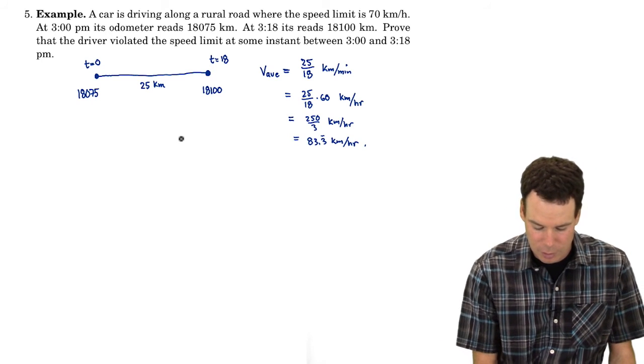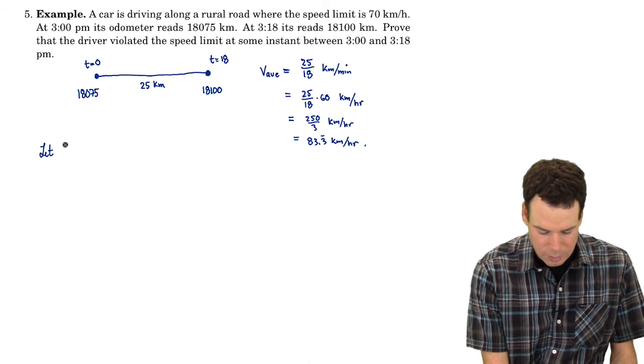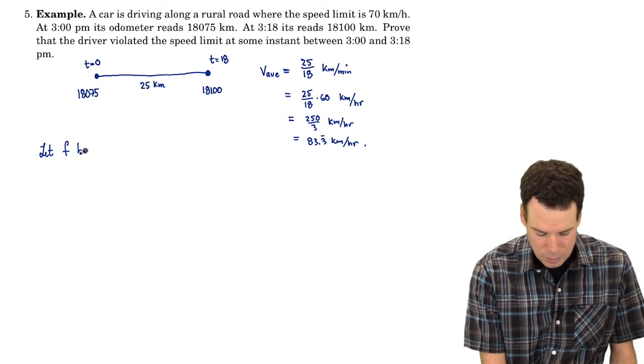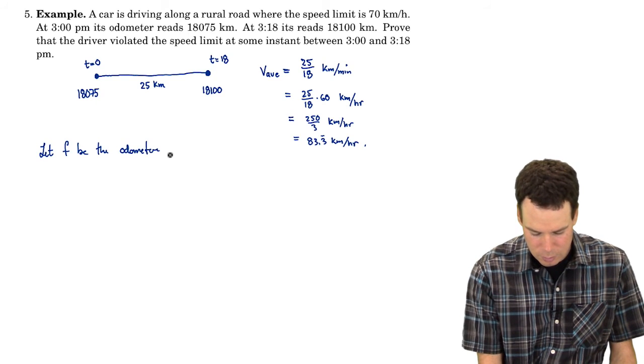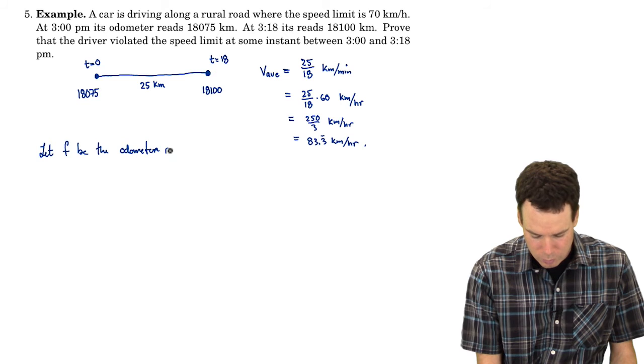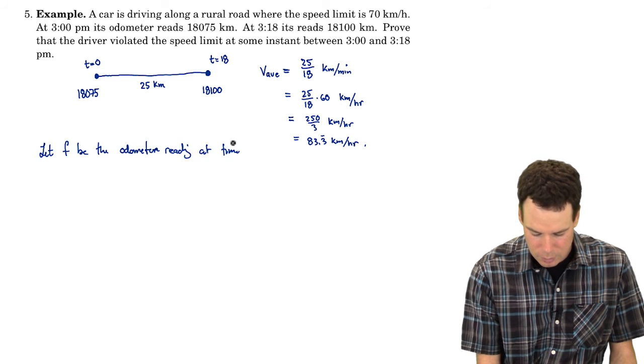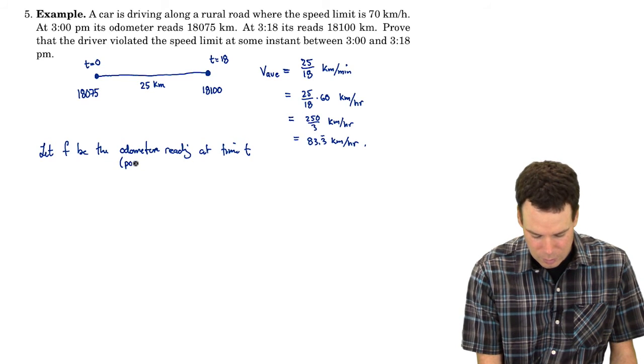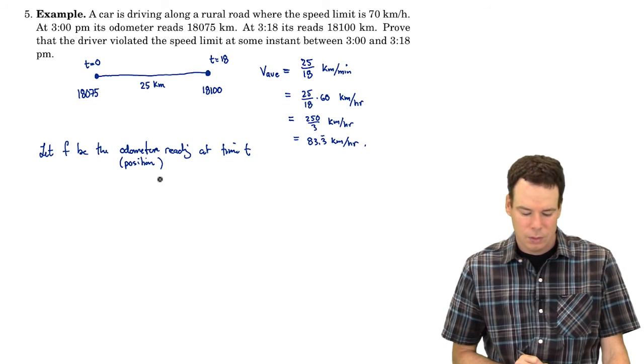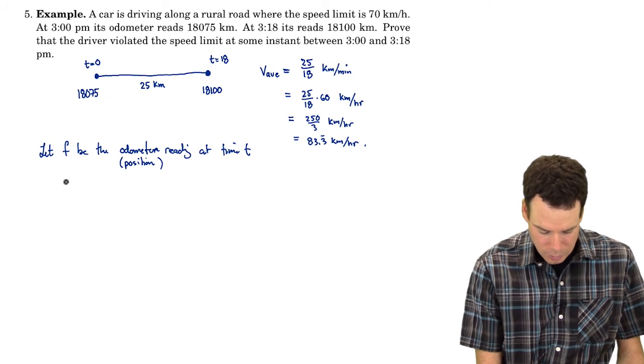So let's actually write this down. Let's be a little bit more formal here. Let f be the odometer reading at time t. The odometer reading, well, that's just a proxy for position. So f is going to represent our position at time t. So what do we know about it?